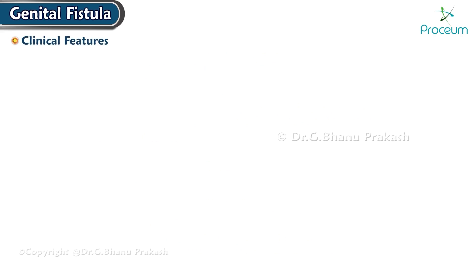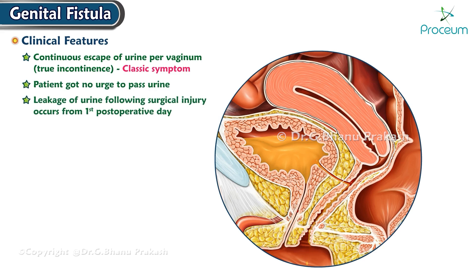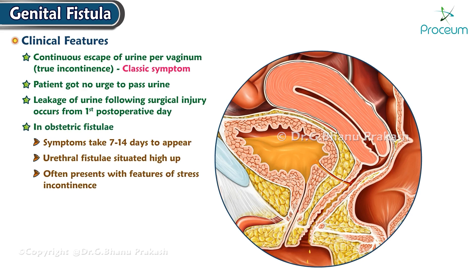Clinical features: Continuous escape of urine per vaginum — true incontinence — is a classic symptom; the patient has no urge to pass urine. Leakage of urine following surgical injury occurs from the first post-operative day, whereas obstetric fistula symptoms may take 7 to 14 days to appear. Urethral fistulas situated high up often present with features of stress incontinence.